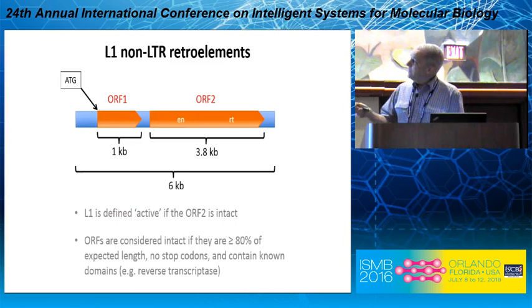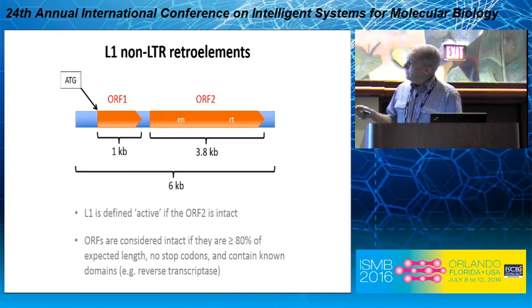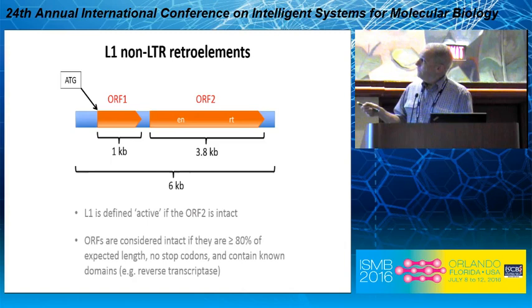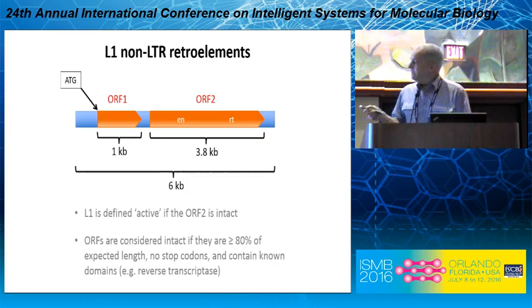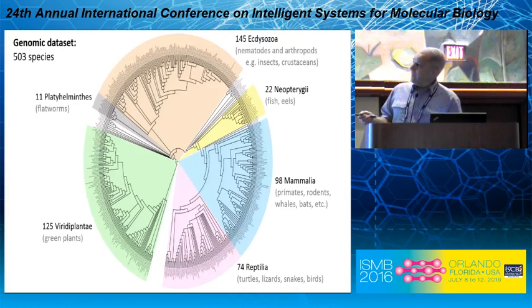Just to recap quickly when we went looking for L1s across the tree of life — this is what an L1 looks like. It's about 6KB long and has two open reading frames. ORF2 is really the one we're interested in. It has an endonuclease domain and a reverse transcriptase domain. We define one of these as being active or potentially active if the ORF is intact — meaning 80% or more of the expected length, no premature stop codons, and containing the known domains we expect, such as the reverse transcriptase domain.